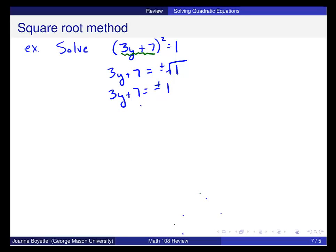You'd still have to solve for y, so I subtract 7 from both sides and get negative 7 plus or minus 1, and then divide everything by 3.